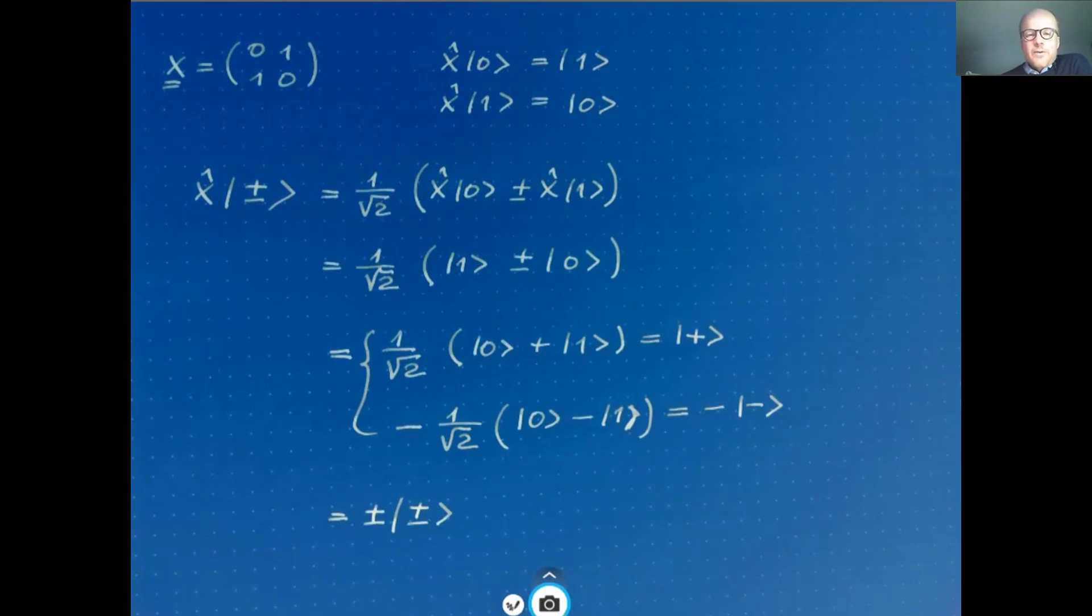So what you see from that is that the plus state is an eigenstate of Pauli X with eigenvalue plus 1 and the minus state is an eigenstate of Pauli X with eigenvalue minus 1. So in fact the plus and the minus state are the eigenstates of Pauli X. They are the eigenbasis of Pauli X.